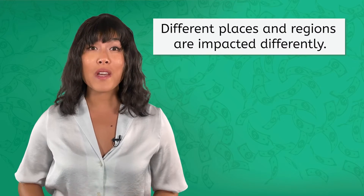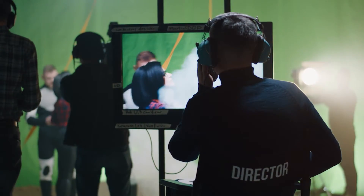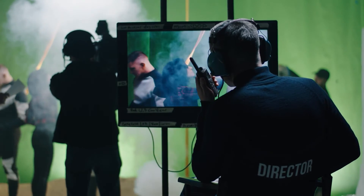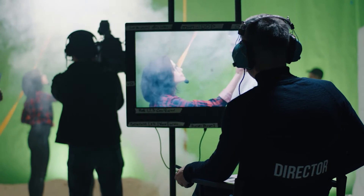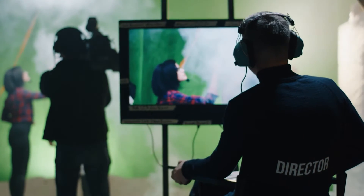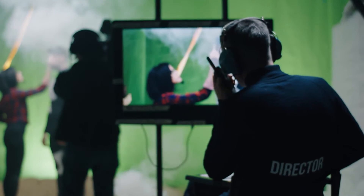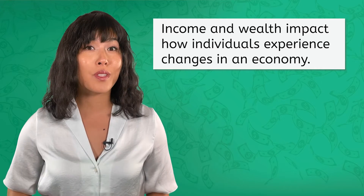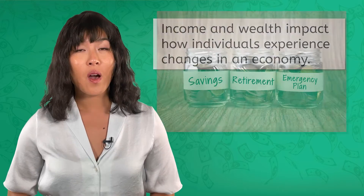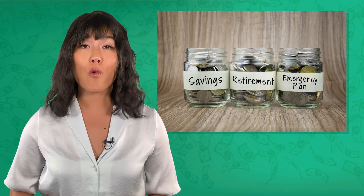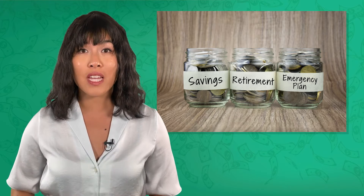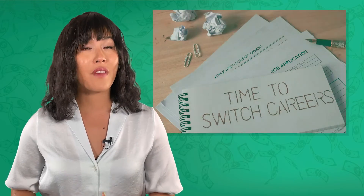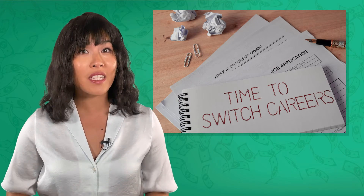Different places and regions are also impacted differently. Let's say that the state of Georgia offers incentives to entertainment companies to film movies in the state. Well, if you're an actor in places like Atlanta or Savannah, you may see an increase in work and wages, but at the same time, actors living in Hollywood might start earning less. And finally, income and wealth also impact how individuals experience changes in an economy. While it might not be fair, having greater income and more savings makes it easier to weather those downtimes. Some folks work in industries that are impacted less by economic changes, or have the sort of education and training that allows them to switch industries when needed.